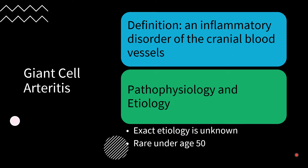The exact cause of giant cell arteritis is unknown. Inflammation of medium to large arteries originating from the arc of the aorta is a hallmark of disease. GCA is characterized by innate and adaptive immune system dysregulation, with pathophysiology thought to involve the body's inappropriate response to vascular endothelial injury. Several genetic and environmental factors have been hypothesized. Advancing age and Scandinavian ancestry are known risk factors, and the condition is rare in adults under age 50, and really rare under 70.